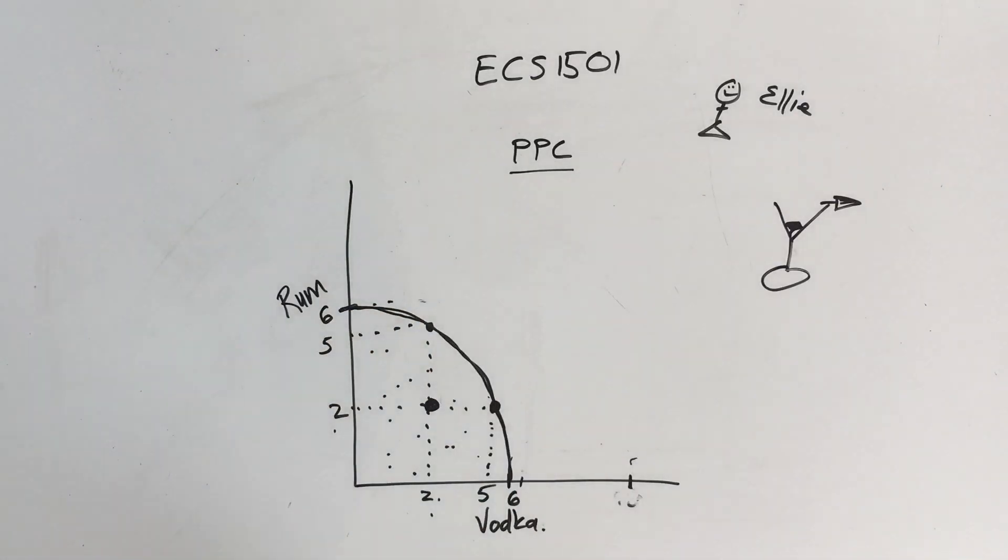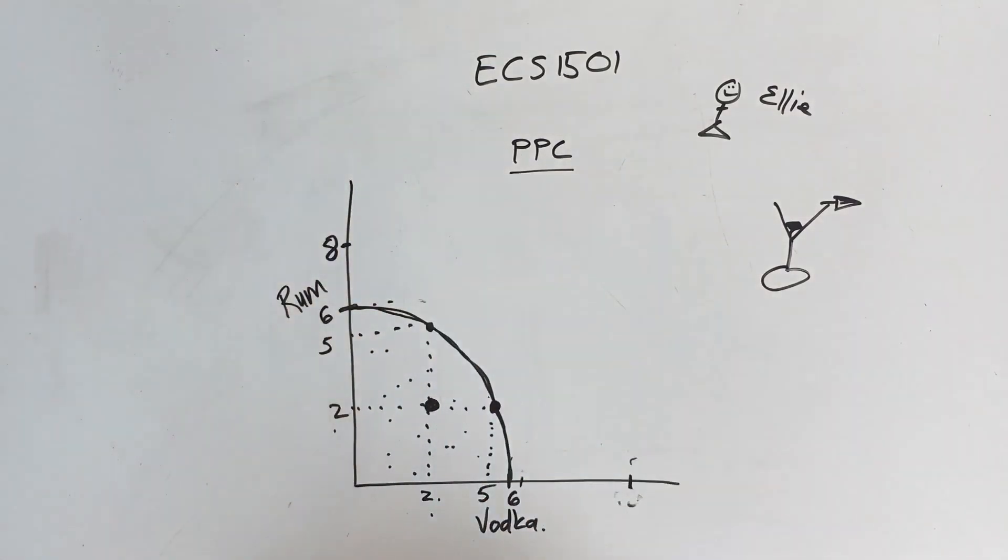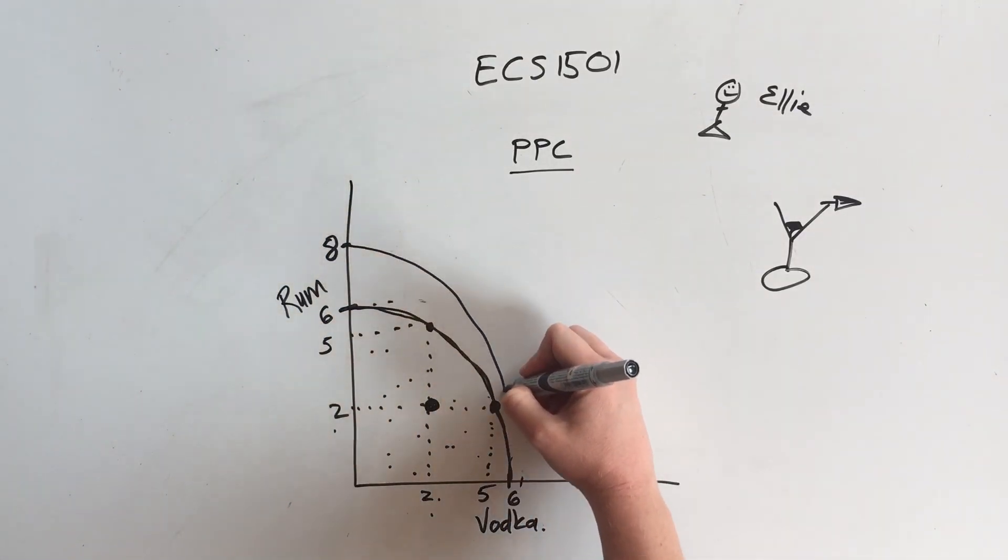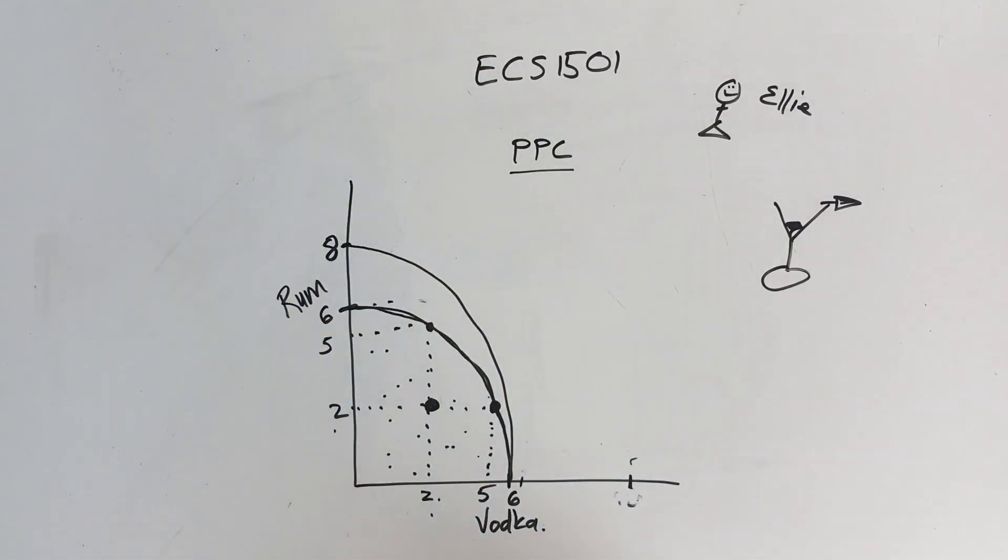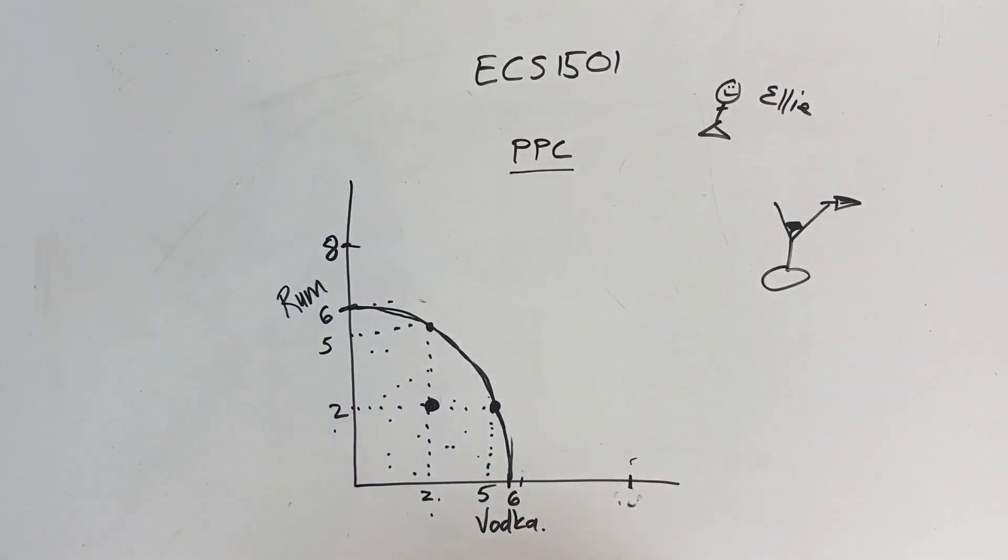But it is possible for this line, for the production possibility curve, to move out. So let's say there's a special on rum, rum is now cheaper and we can buy more bottles of rum. Let's say this can go up to around eight. This means that we could have a new curve due to external forces that runs like that. This will only happen because of outside forces.